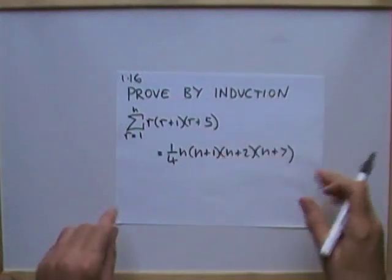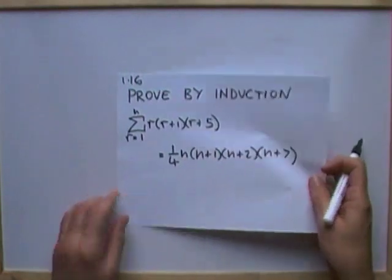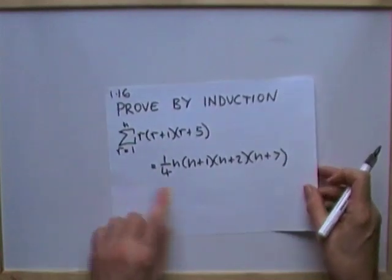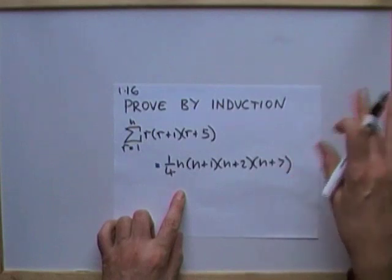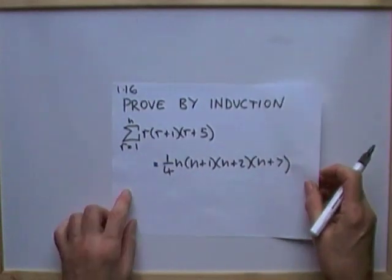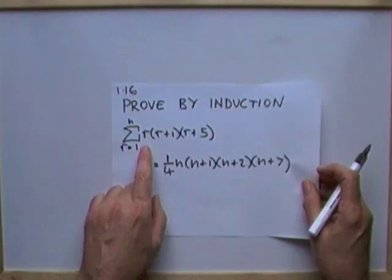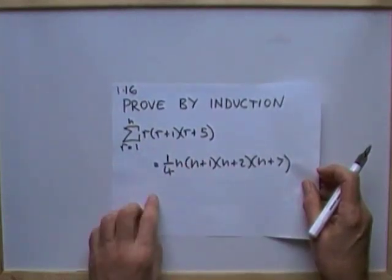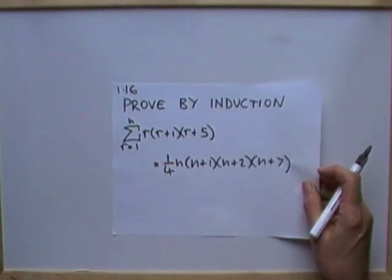Number 116 from the MathsCamp. Prove by induction — another summation formula, but one that factorises nicely this time, so no need for that extra work on the side. Prove by induction that the sum of the product of three parts — r, r plus 1, r plus 5 — equals one quarter n times (n+1) times (n+2) times (n+7).